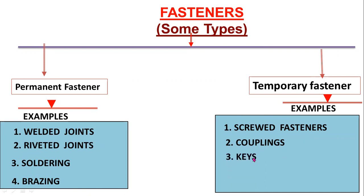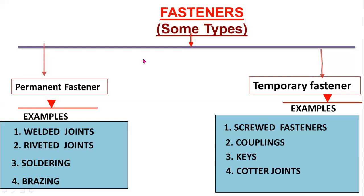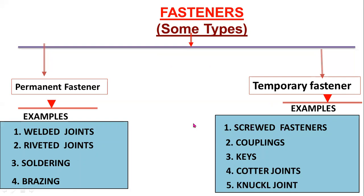Keys include sunk key, saddle key, and Woodruff key. Quarter joints include sleeve and socket quarter joints, and knuckle joints. These are all examples for quarter joints. These are all examples for temporary fasteners.